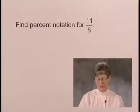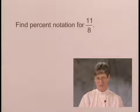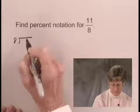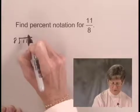The first thing that we'll do is to divide to find decimal notation for 11 over 8. We'll take 8 into 11. 8 goes into 11 one time.